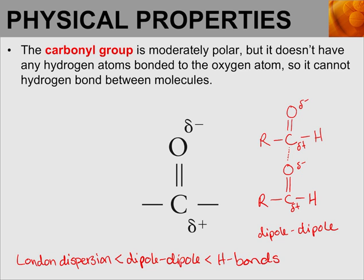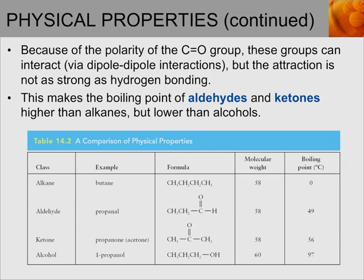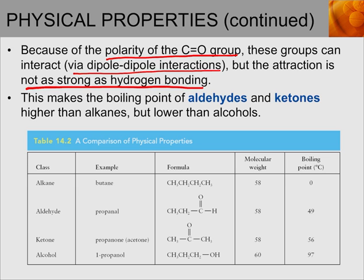Being in the middle of the IMF hierarchy affects things like boiling points. Because of the polarity of the carbonyl group, these molecules can interact via dipole-dipole interactions, but the attraction is not as strong as hydrogen bonding. This makes the boiling point of aldehydes and ketones higher than alkanes but lower than alcohols.